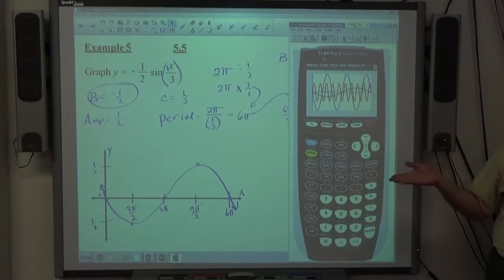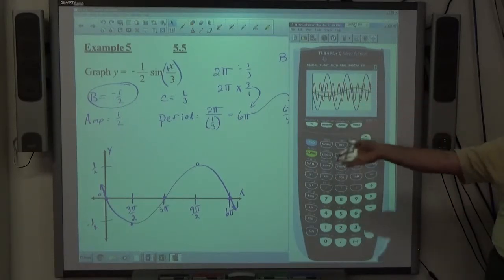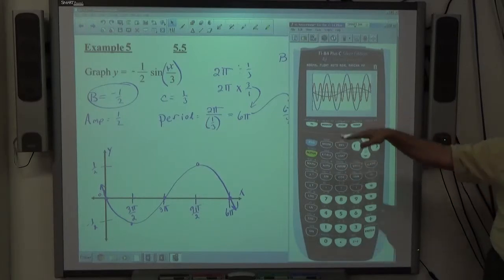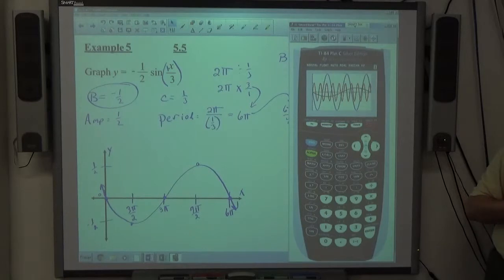ACT is the main place you guys are going to need to know this. Okay. And in the ACT, they're going to say which of the following is the graph of this function. So if you are able to pinpoint amplitudes and periods, you should be able to identify in which way it goes up or down to begin with. You should be able to pinpoint which graph it is.